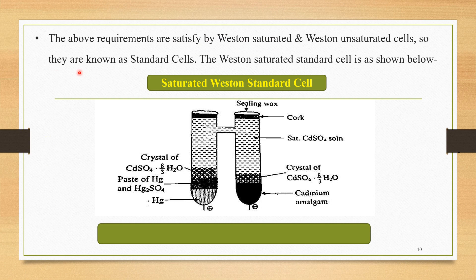These requirements are satisfied by Western saturated and Western unsaturated cells, so they are known as standard cells. Both cells obey most of the requirements and that is why they are treated as standard cells. We will study one important type among these two: the Western saturated standard cell.